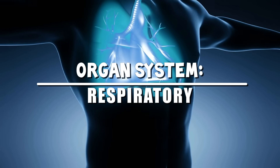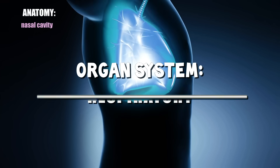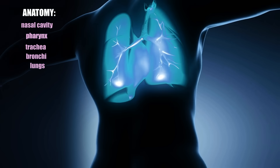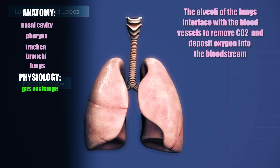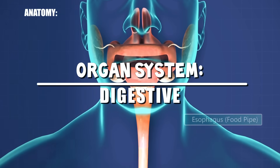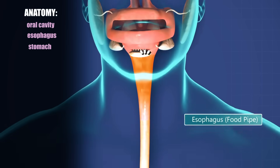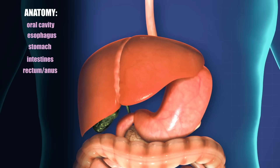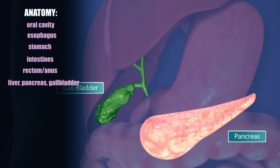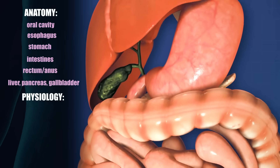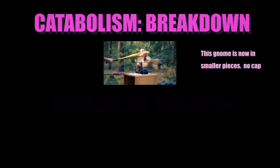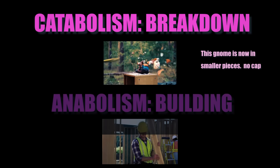Respiratory system is composed of the nasal cavity, pharynx, trachea, bronchi, and lungs. It functions for gas exchange. Digestive system is composed of the oral cavity, esophagus, stomach, intestines, rectum, anus, the liver, pancreas, and gallbladder. It functions for food catabolism — which is a breakdown — as opposed to anabolism, which is building.